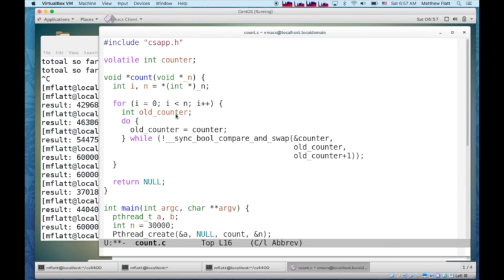So the idea is that we get the current value that's in the counter variable, and then we pass, compare, and swap the address of the counter variable, the value that we think it currently has, and the value that we want it to be, which is one more than the old value.